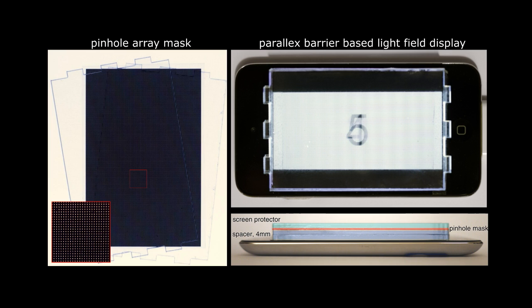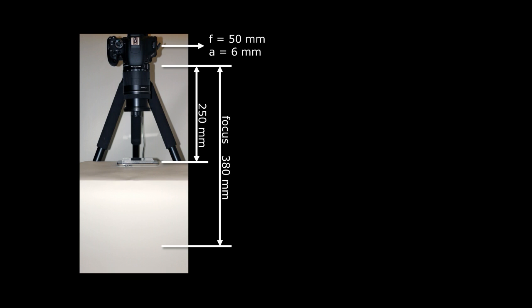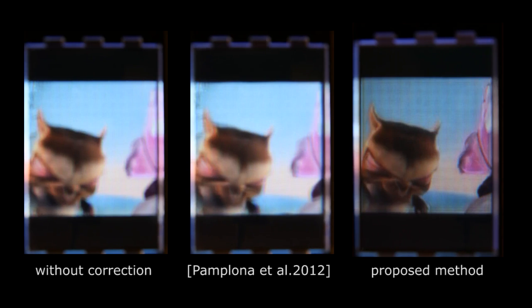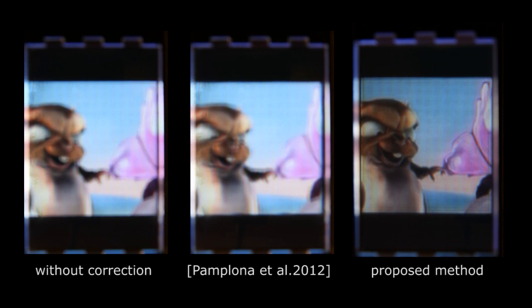For the prototype and experiment, we build a light field display using a parallax barrier on an iPod touch. The camera emulates a minus six diopter hyperopic eye with a 6mm diameter pupil. On the right is a blurred scene with a corrected image. Here we show the comparison using a short animation.